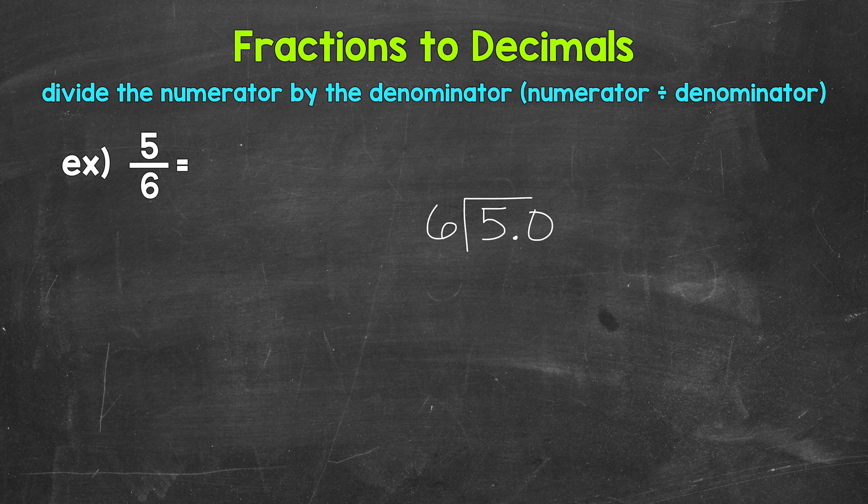Once we have that decimal and the zero, we need to bring the decimal straight up into where the quotient — the answer — will be. And now we can think of this as 50 divided by six.